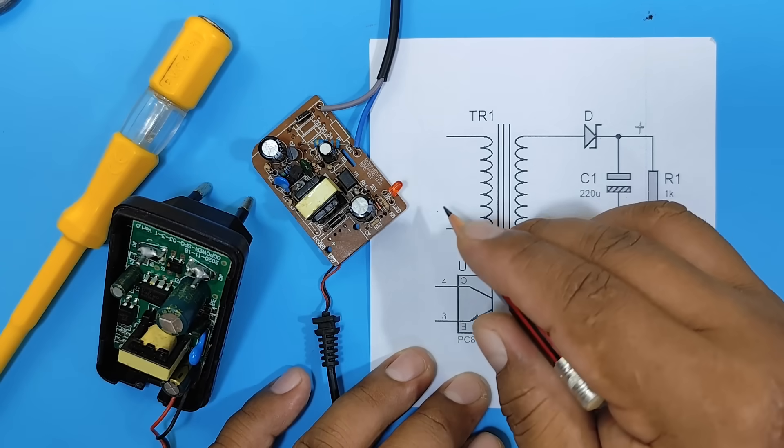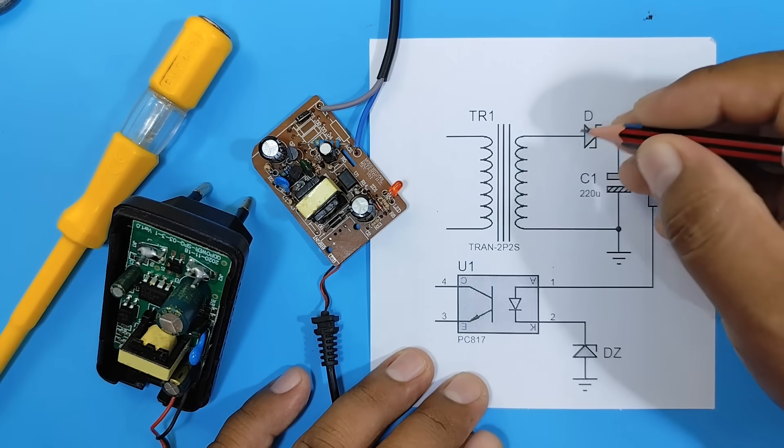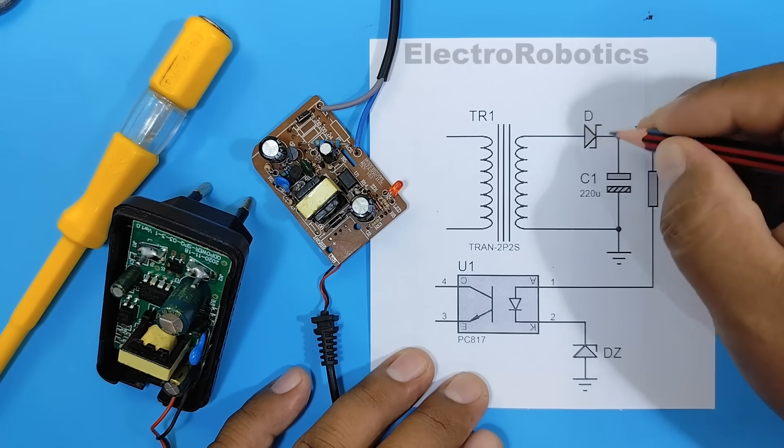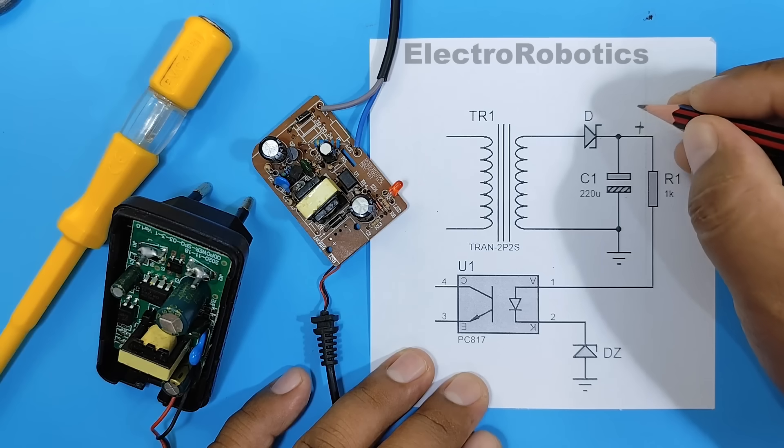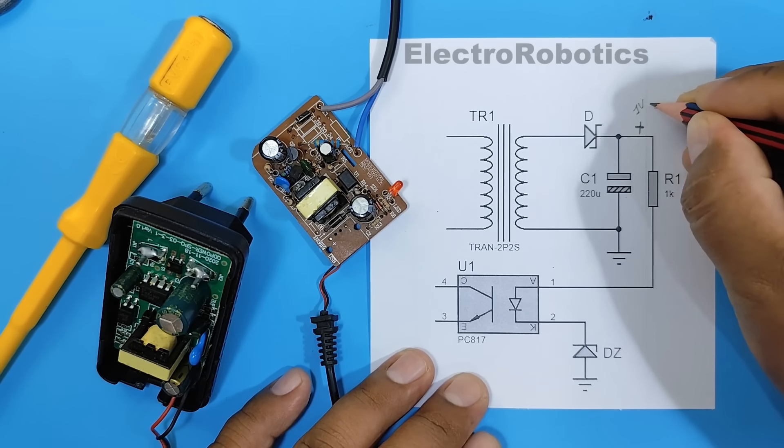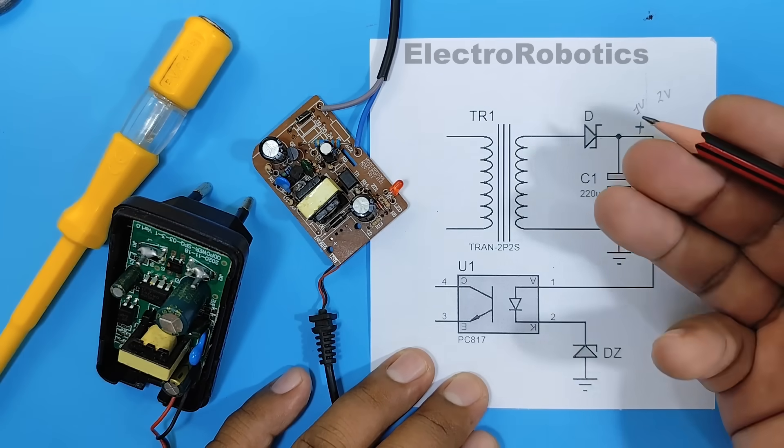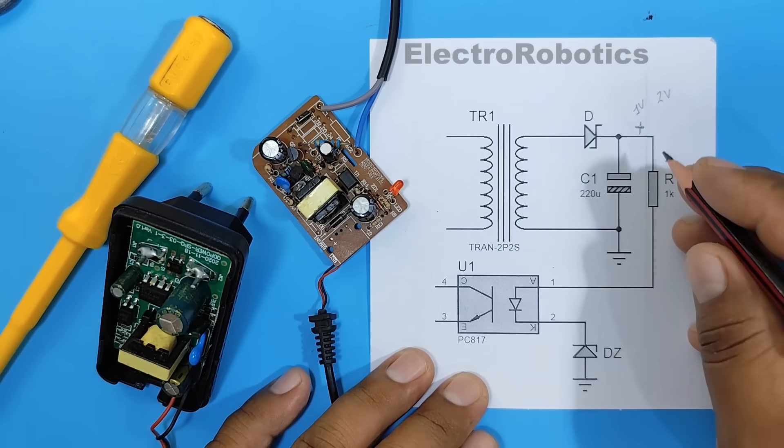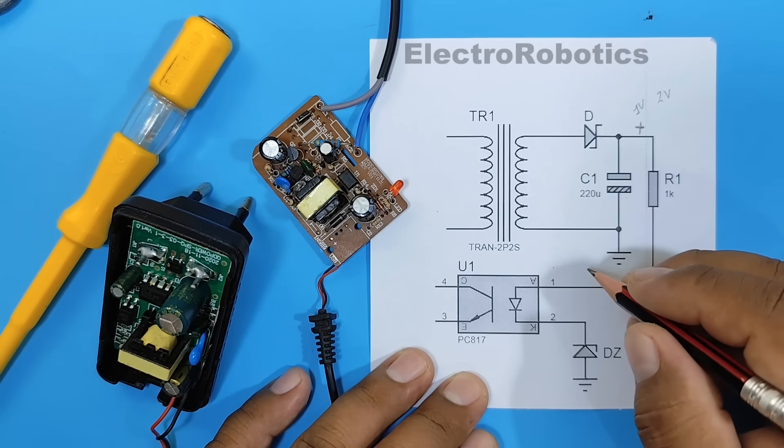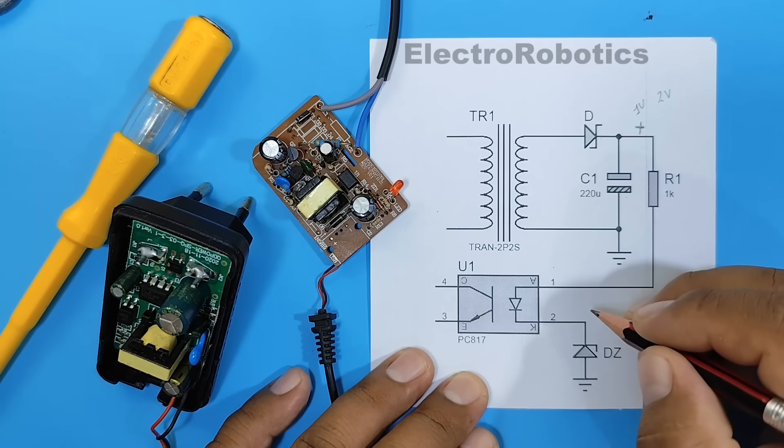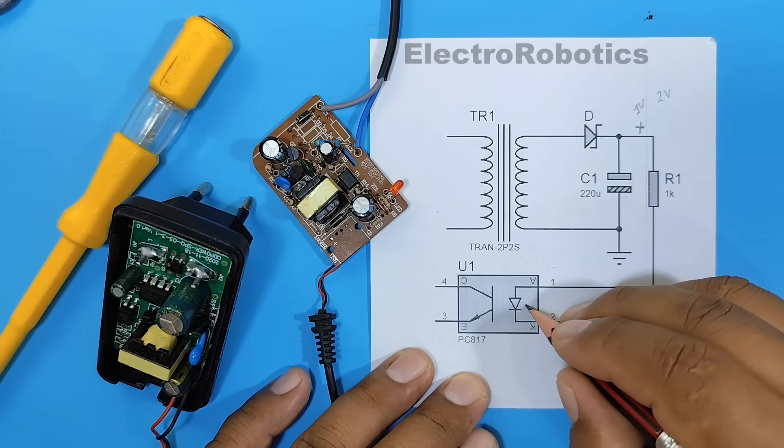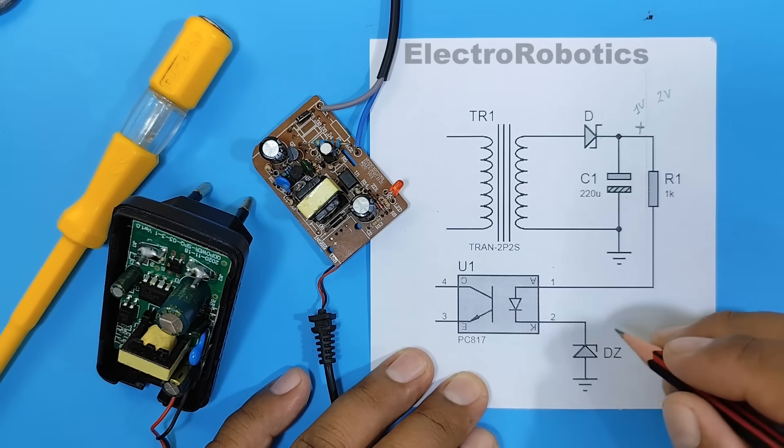That is, the circuit responsible for delivering the voltage through this diode starts with a low voltage. It will start with 1 volt, then it will go to 2 volts, and so on, it will increase the voltage. Until when?